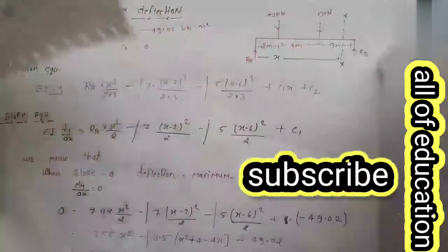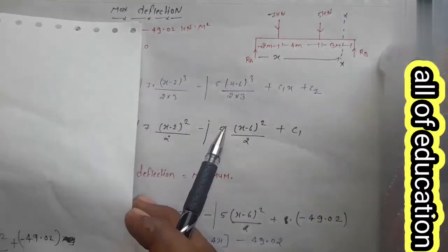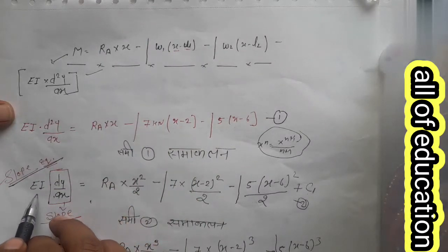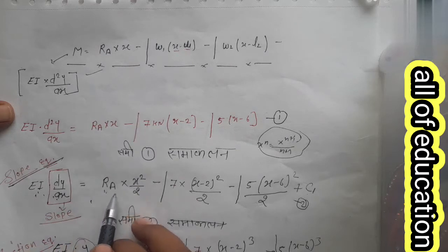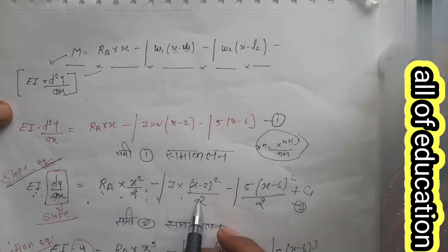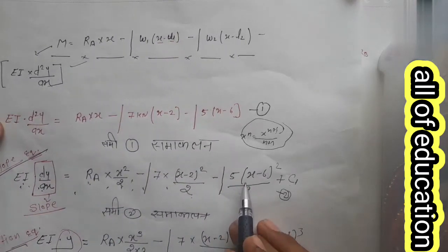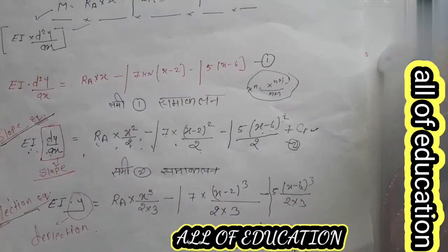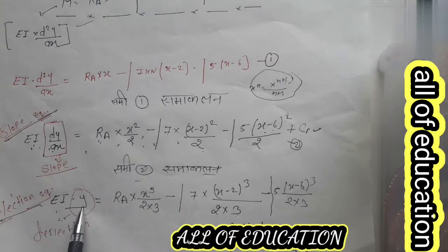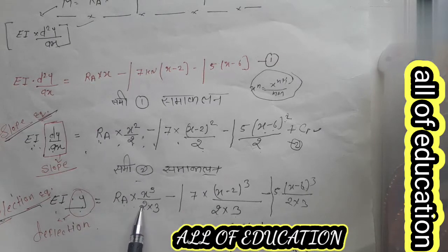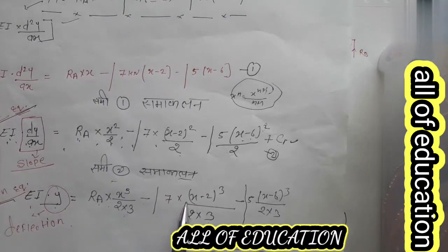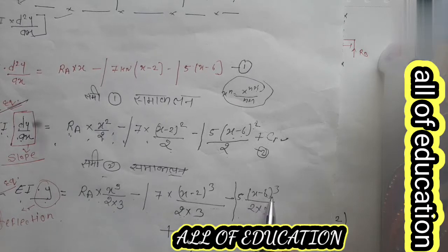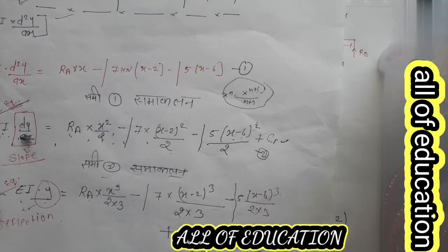Second step में हमने slope equation और deflection equation बनाई थी। Slope equation थी: EI dy/dx = RA × x²/2 − 7 × (x−2)²/2 − 5(x−6)²/2 + C1। इसका integration करने के बाद deflection equation: EI·y = RA × x³/6 − 7(x−2)³/6 − 5(x−6)³/6 + C1·x + C2।